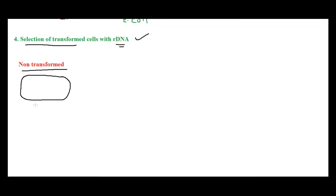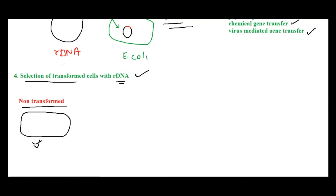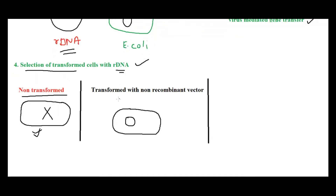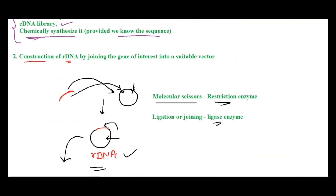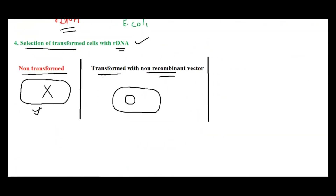The first possibility is non-transformed cells — there is a high chance that not all cells will take up your rDNA, so in this case the rDNA has not been taken up. The second possibility is transformed cells, but the plasmid or vector is non-recombinant — when preparing the recombinant DNA, not all vectors will have your gene of interest. So you may have transformed cells that contain a non-recombinant vector, meaning they also lack your gene of interest.